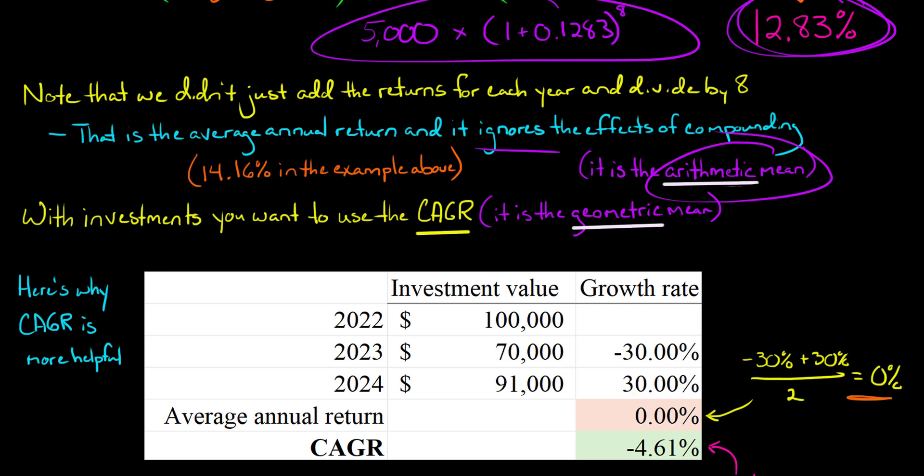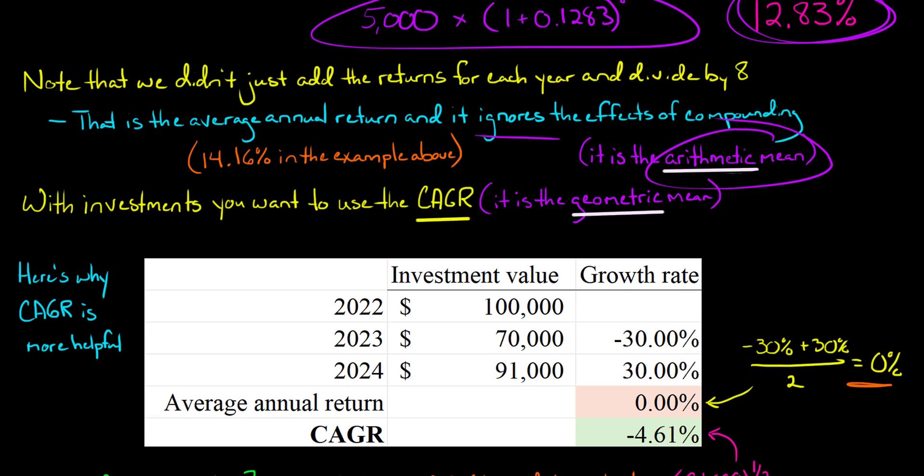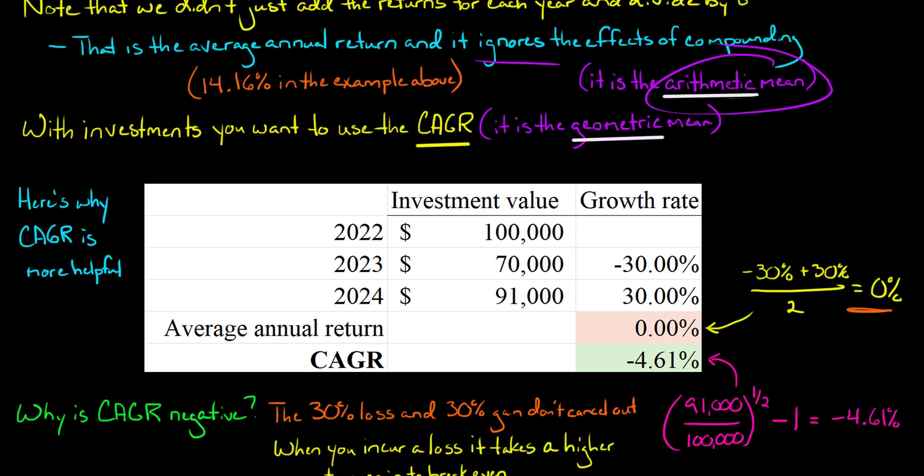But the compound annual growth rate is more effective because actually, this is the same formula as before. You take the ending value, $91,000, divide it by the beginning value, and you raise it 1 divided by T. And there were two years between the end of 22 and the end of 2024. So you divide it by 1 over 2. And then, of course, subtract 1. You get to a negative 4.61%. This makes more sense.